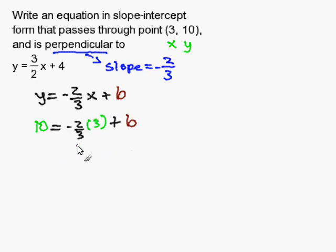To solve for b, I simplify my equation. Negative 2 thirds times 3 is negative 2 plus b. I add 2 on both sides and b is 12.